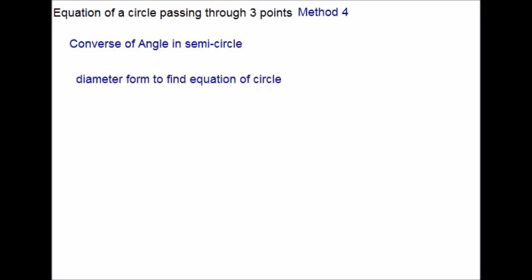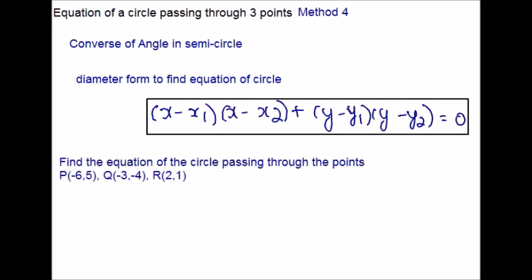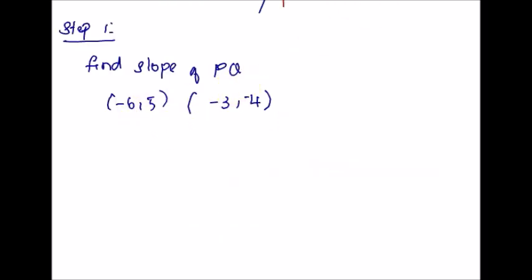Before we get into the example, I would like to give you the equation of a circle in diameter form. This can be applied when the two endpoints of the diameter are given. Here is the example question. Let me draw the figure — here is triangle PQR, and let this be line L1 and this be line L2. Step 1: find the slopes for PQ and PR.